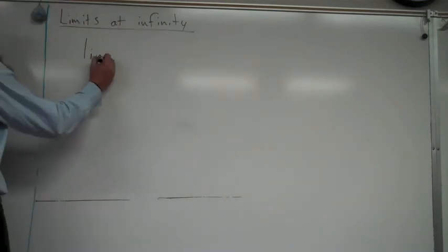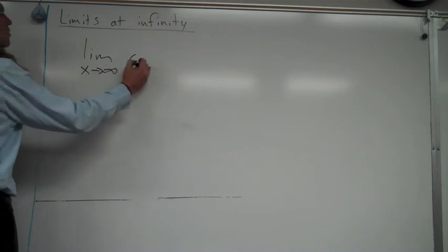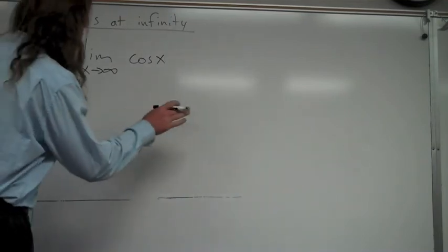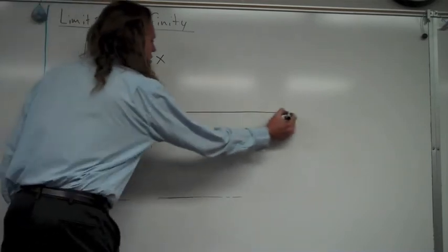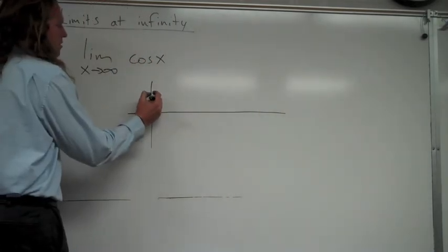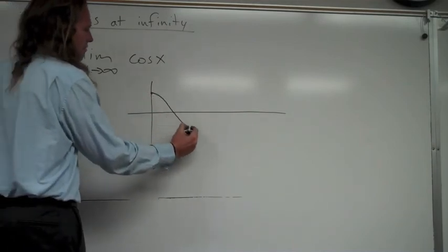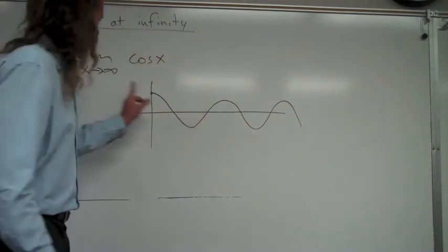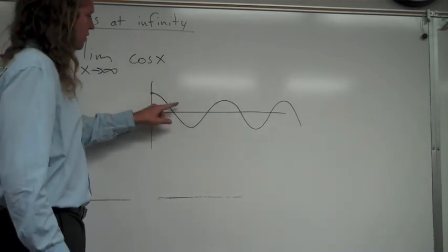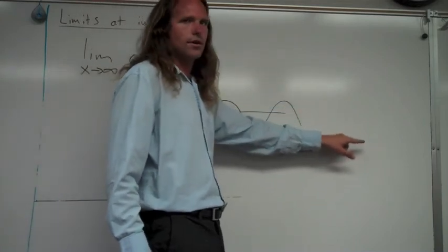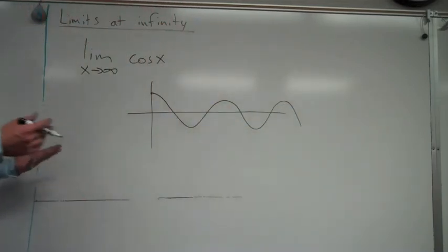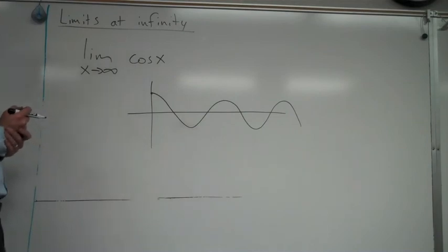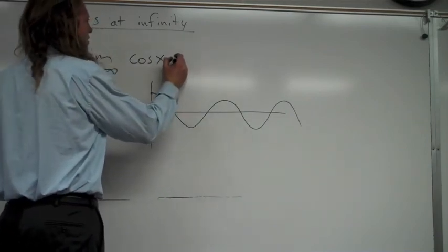Let's look at the limit as x approaches infinity of cosine x. As x goes to infinity, the cosine function goes down to negative one, back up to one, down to negative one, back up to one — over and over again. It never settles on a certain y value. In order for a limit to exist it has to approach a certain y value, and that does not happen here. So this limit does not exist.